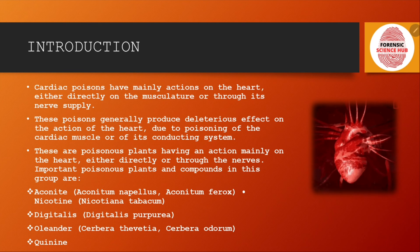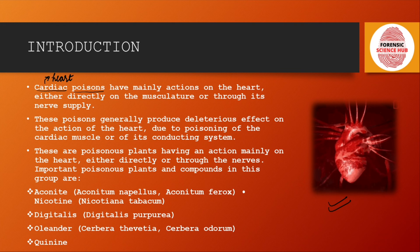First of all, let's have an introduction on what cardiac poisons are. As the name suggests, cardiac means anything related to the heart. So any poison that is affecting the heart is known as a cardiac poison. This poison may act in two ways: it can either directly affect the musculature of the heart — the cardiac muscles — or it can affect the heart by affecting the nervous supply of the heart.